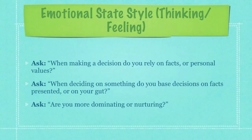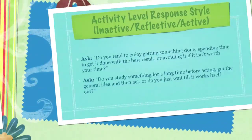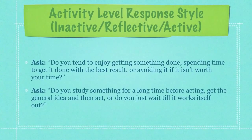Then you have the emotional state — meaning, are you more of a thinking person or a feeling person? There are no right or wrongs. I process data by thinking my way through it, meaning I'm a thinking-type emotional person. Other people process data by completely immersing themselves emotionally — they see the world as a whole while ignoring the minute details. Thinking-type people see the details but miss the emotional impact of situations. To find out what someone is, just ask: when making a decision, do you rely on facts or personal values? Or: when deciding on something, do you base decisions on facts presented or on your gut?